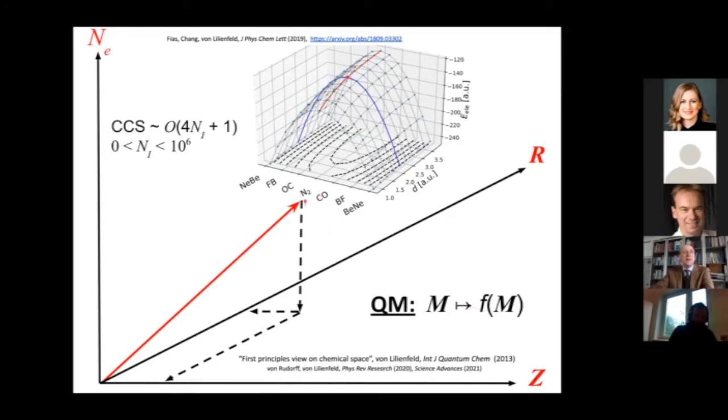For example, I have N2. In this space, you can vary the nuclear charges. N2 would be enabled by carbon monoxide, BF, beryllium neon, or you do it in the other direction. You have your two nuclear charges of N2 at Z equals 7. You change one to 8, the other one to 6 for CO. Your potential energy looks like this inverted parabola, and on this ridge here, you see the binding curve of N2.